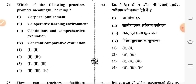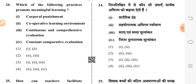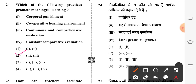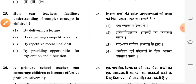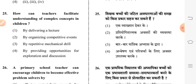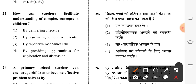That fourth option states it decreases children's natural interest and curiosity involved in learning. Twenty-fourth question: which of the following practices promotes meaningful learning? Second option is correct: a cooperative learning environment and continuous and comprehensive evaluation. How can teachers facilitate understanding of complex concepts? Fourth option: by providing opportunities for exploration and discussion.